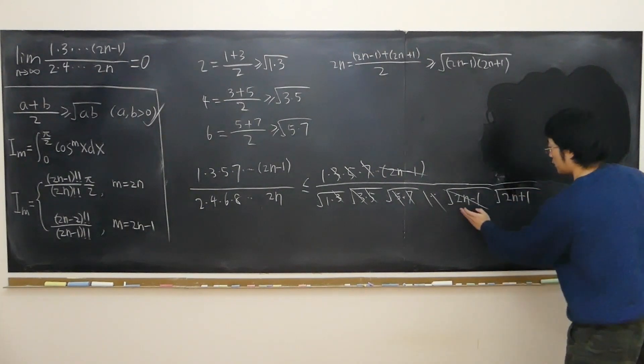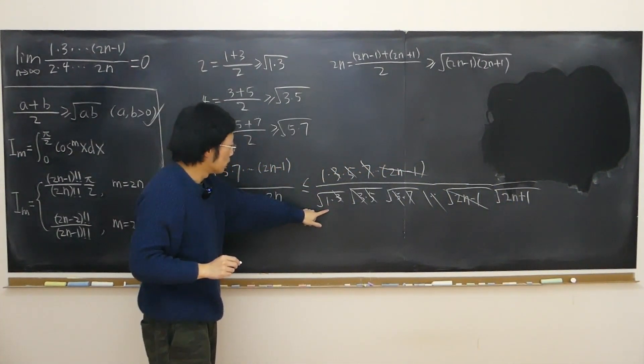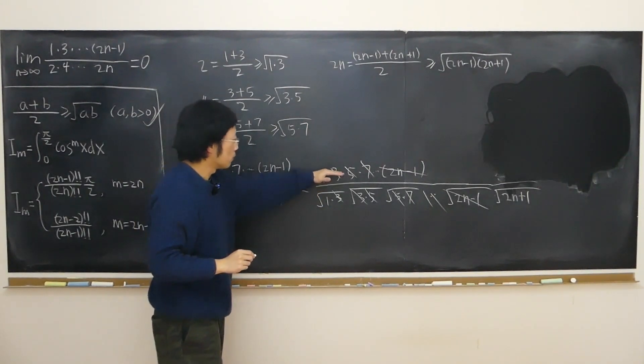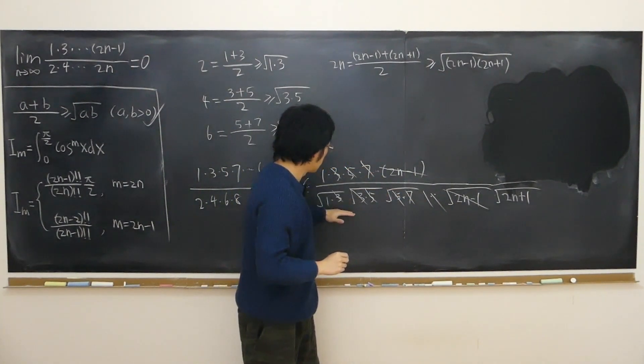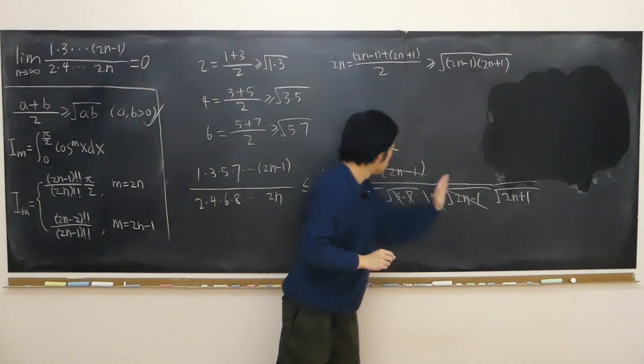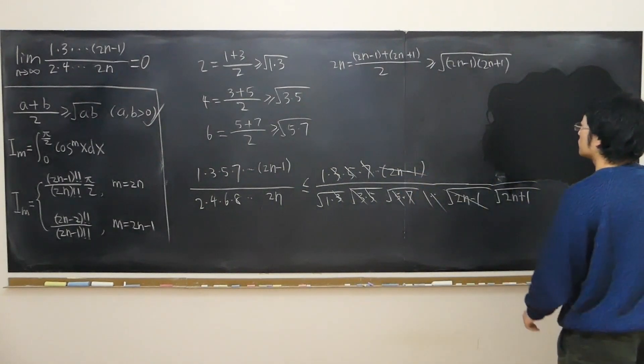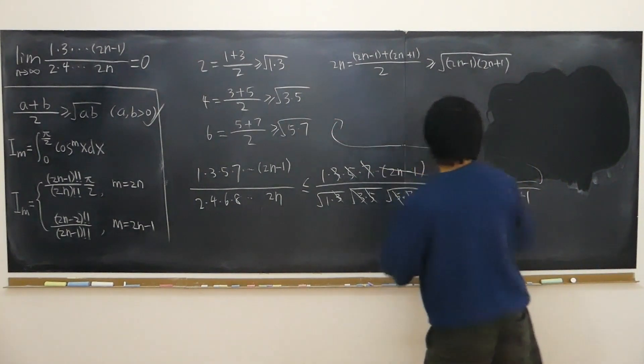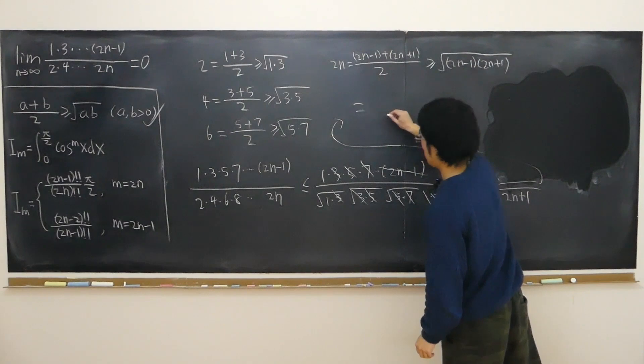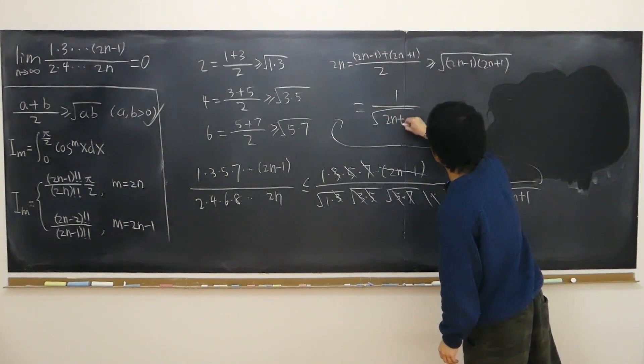So in fact what we are left with is 1 is still here, 1 is still up here, and everything else is gone on the bottom. Everything else is gone on the bottom except for this term. So on the top I still have 1. So in the end I should have 1 over this term, square root of 2n plus 1.